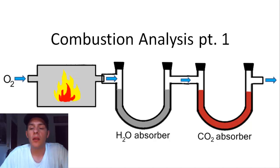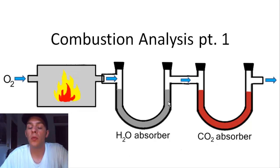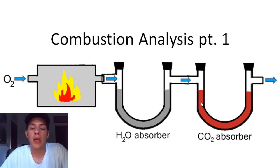So basically it breaks down like this. This is what your basic combustion analysis apparatus is going to look like. It consists of a furnace with your sample inside, and it also consists of a U-shaped tube that contains a material that absorbs water, and then connected to that is another U-shaped tube containing a material that absorbs CO2.